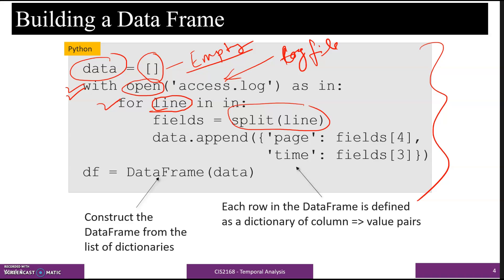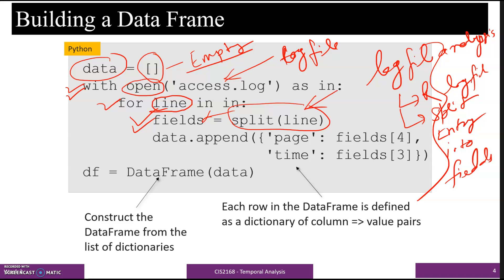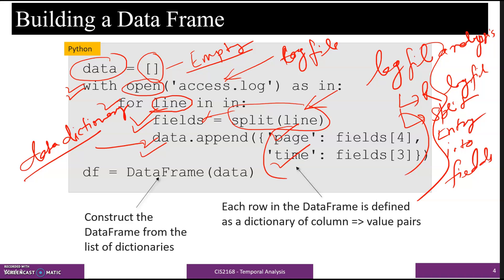We are using split to split the line into fields. If you remember when I explained the block diagram for log file analysis in week two, the first step was reading the log file and the second step was splitting the entries into fields. So we are splitting the entries — which are in the form of lines — into fields. Then we create a data dictionary which has two values: page and time.